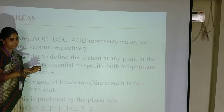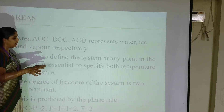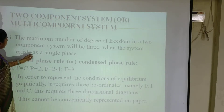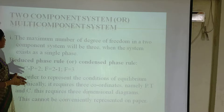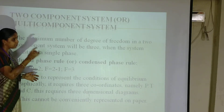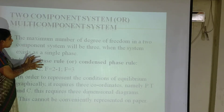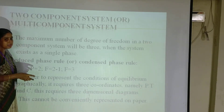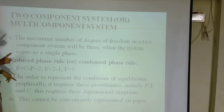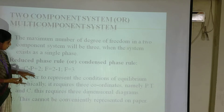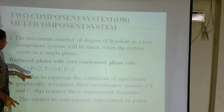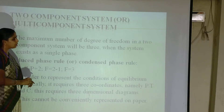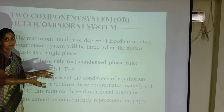In every area between the curves, we have only one state — that is, one phase: either solid, liquid, or vapor. Here the degree of freedom is 2 (bivariant). The next topic is the two-component system or multi-component system. In the two-component system, we are not considering the gas phase in the phase rule. So the phase rule is reduced — the reduced phase rule is F' = C − P + 1.